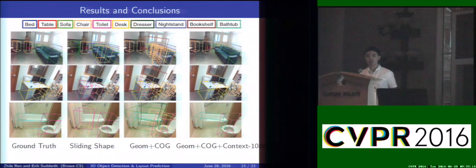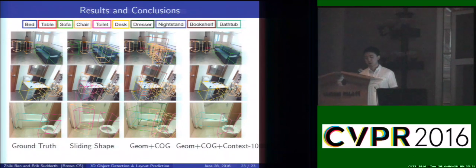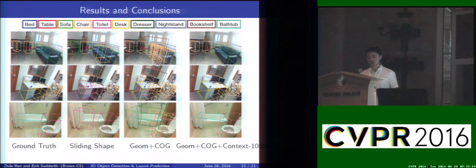To conclude, here are some visual results of our algorithm. The first column is the ground truth, followed by Sliding Shape, our first-stage detector, and our final stage where the second stage has guided detection using contextual relationships. I'm happy to discuss the details at the poster session, and thanks a lot for your attention.